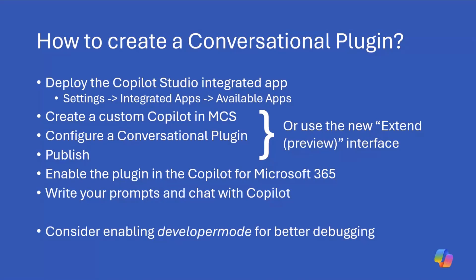First of all, we need to enable the Copilot Studio integrated app in our environment. We need to go in the Microsoft 365 admin UI under Settings, Integrated Apps, and Available Apps, and look for the Copilot Studio application. Once we have enabled the Copilot Studio application, we can use two different techniques to create a conversational plugin with Copilot Studio.